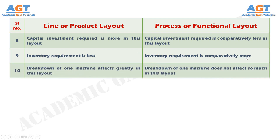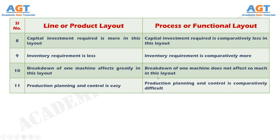Number 10: In product layout, breakdown of one machine affects greatly, whereas breakdown of one machine does not affect so much in process layout. Number 11: In product layout, production planning and control is easy, whereas in a process layout, production planning and control is comparatively difficult.